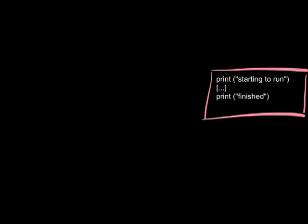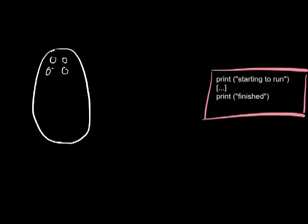Here we have a simple program — this is single-threaded. The way this looks when executed is we have a big blob representing a process. Any global variables exist within this big blob. In a single-threaded application, which is just a traditional application, we have a single thread that runs through, has access to all global variables, can call out to methods or functions, and then returns. We are only ever executing a single instruction at a time.